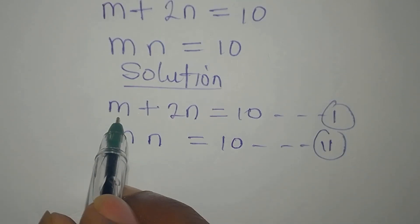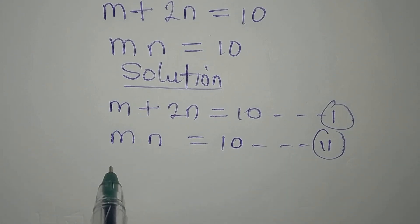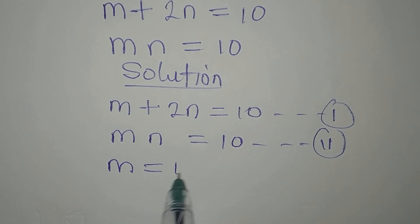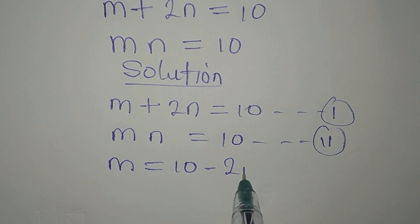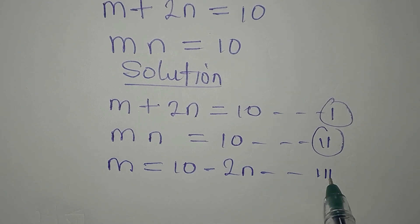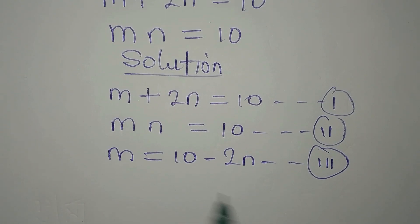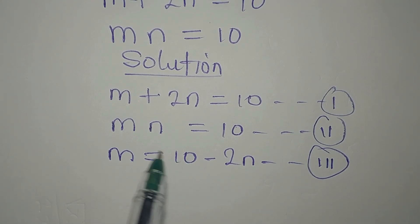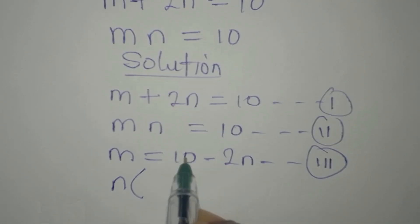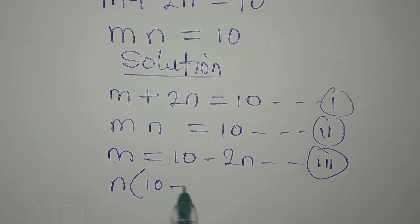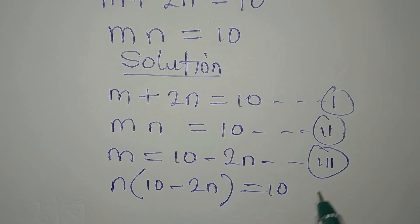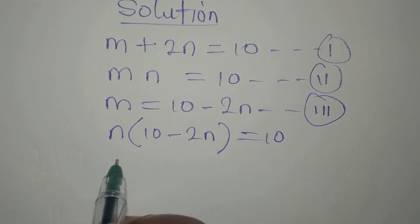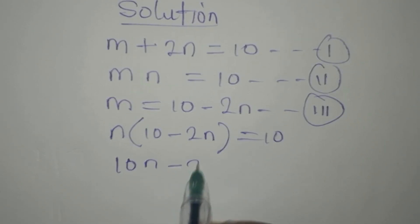From equation one, we will make M the subject, so M will be equal to 10 minus 2N. We'll call this equation three. Now put equation three into equation two, so we have N multiplied by everything in bracket, which is 10 minus 2N, and this is equal to 10.